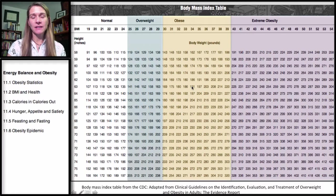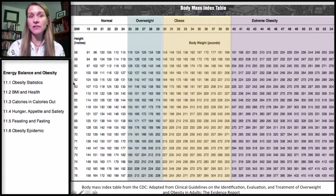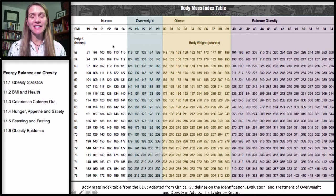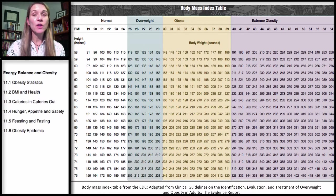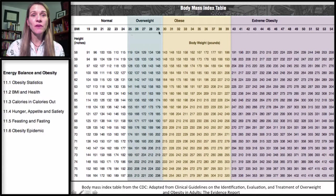If you look at a Body Mass Index table, you're going to see height, usually given in inches on the side, and then weights, and that's going to correlate with a number. This index looks at both height and weight and assigns a health category. A normal BMI ranges from 19 to 24, overweight is 25 to 29, obese is 30 to 39, and extreme obesity is over 40.